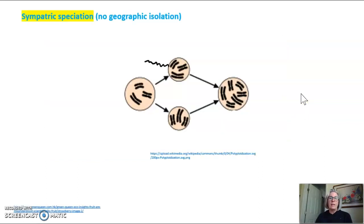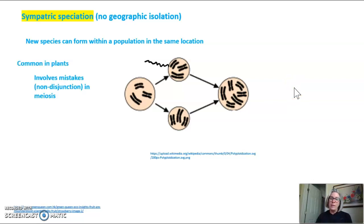The second way that two species can form is called sympatric speciation, and that's where there's no geographic isolation. In this case, a new species forms within a population in the same location. This is common in plants, and it always involves mistakes, a non-disjunction event in meiosis. And in this case, the non-disjunction would happen to every single chromosome in the genome.